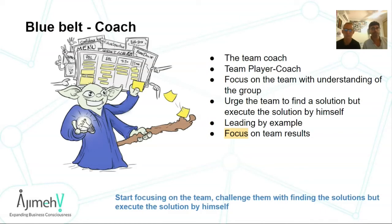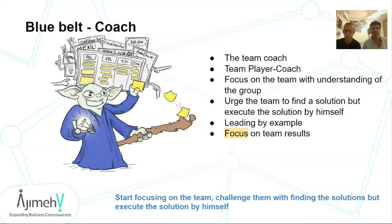You can often find a Scrum Master at the blue belt level who still executes the solution themselves — either due to lack of trust, an unready team, or a feeling that if they step back things will fall apart. Sometimes that's correct — if they step back, things will fall apart. Think about what the next level would be: how does a Scrum Master advance from starting to be a coach and focusing on the team?